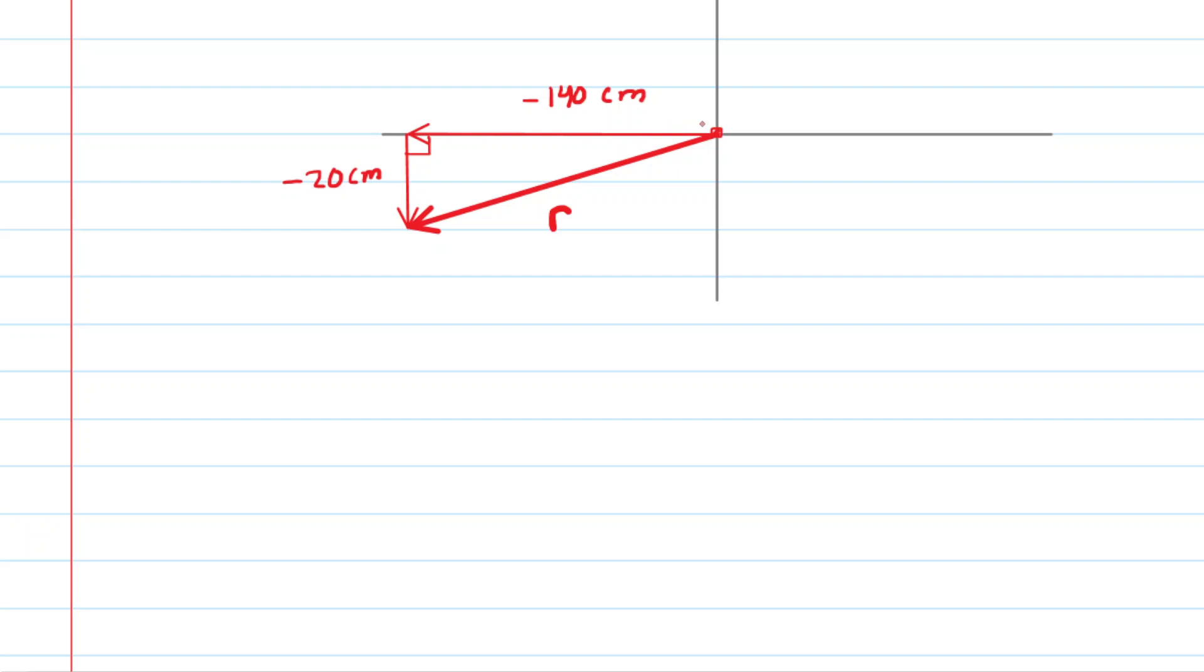So here is that drawing of the X and Y components. X is negative 140, Y is negative 20. Notice the X component points to the left along the negative X axis, and then the Y component points downward along the negative Y axis. The resultant vector is that vector that we have marked R.